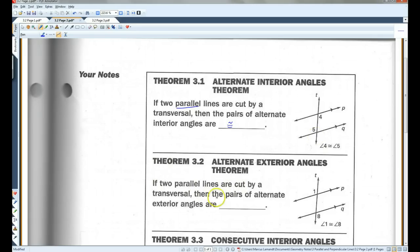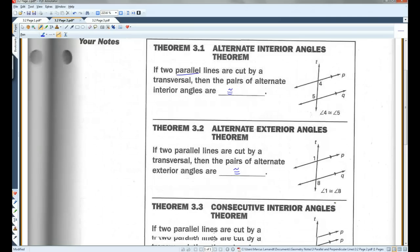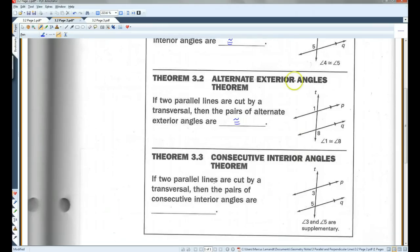If two parallel lines are cut by transversal, then the pairs of alternate exterior angles are congruent as well. Okay, so angles 1 and 8, also this angle and this angle.